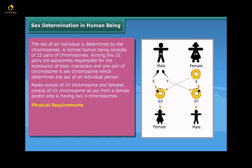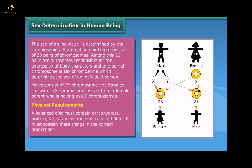Physical requirements: a balanced diet must contain carbohydrates, protein, fat, vitamins, mineral salts and fiber, and must contain these things in the correct proportions.